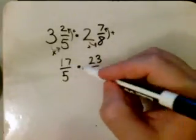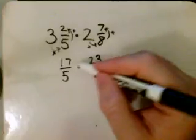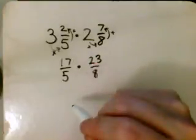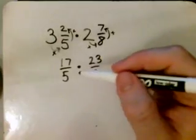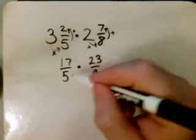Now if possible, you would cross cancel if you can. Here you can't. So what you would do is you would just multiply across.